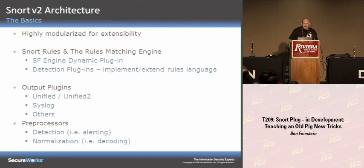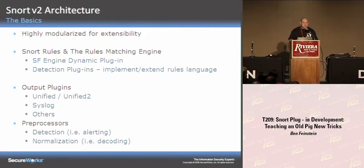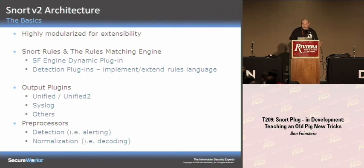The V2 architecture is quite modularized and built to be extended. You have the Snort rules and the rules-matching engine. The SF engine is a dynamic plug-in — the core rule-matching engine is pluggable. You also have dynamic detection plug-ins that can implement or extend the rules language, adding new keywords and new constructs to the rules syntax. They also have output plug-ins — for example, the unified or unified two outputs, which is a highly efficient binary alert and log stream, plus syslog output.